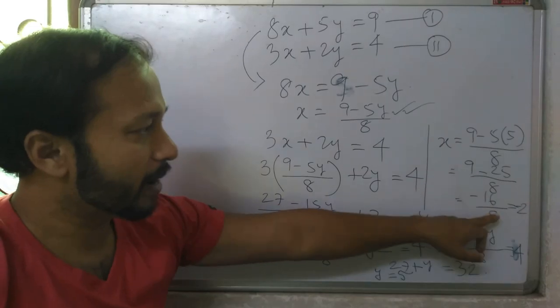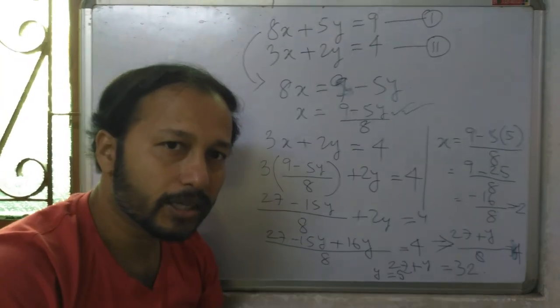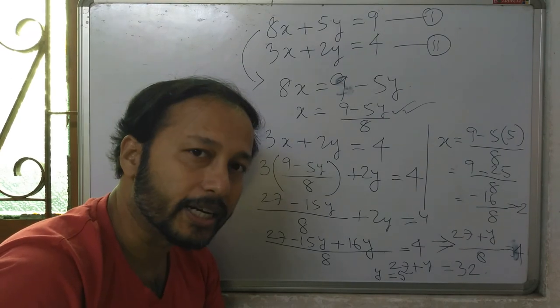So we got x equal to minus 2 and y equal to 5. This is called the substitution method for solving simultaneous linear equations.